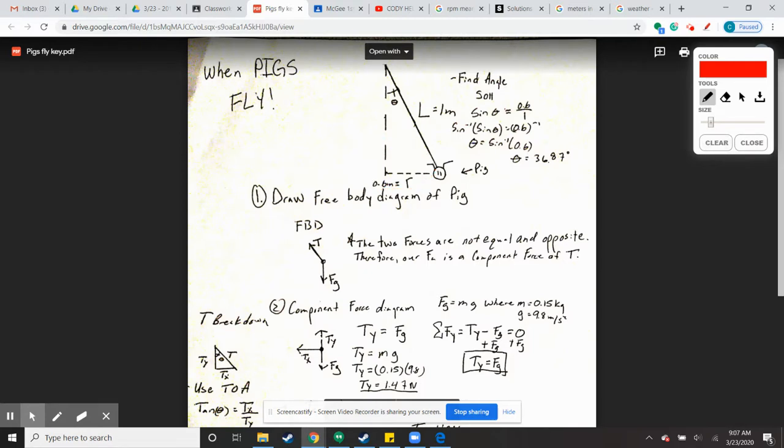So knowing that, this length right here is 0.6, this one's 1. Using sine equals opposite over hypotenuse trig function, that's going to be sine theta equals 0.6 divided by 1.